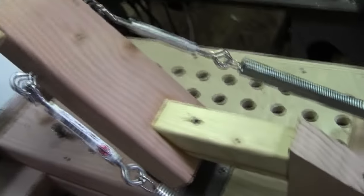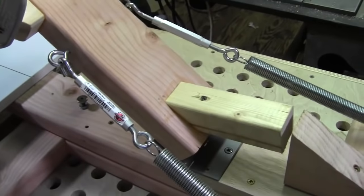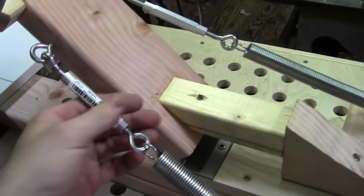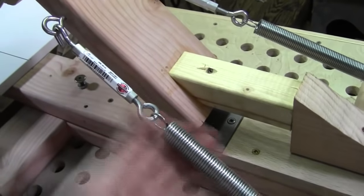Like for instance, if my screen wanted to fall a little bit from weight or whatever, then I could just adjust the turnbuckles and get them correct.